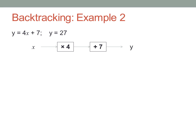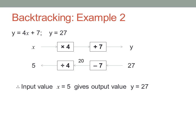Now I can backtrack my rule. The output value, y, is twenty-seven. Now work backwards, doing the opposite operations in the opposite order. Twenty-seven minus seven is twenty, and twenty divided by four is five. Therefore, an input value for x of five gives me an output value for y of twenty-seven.